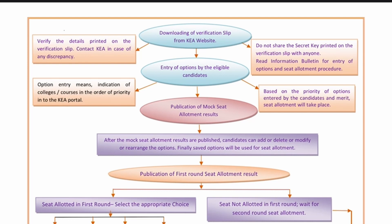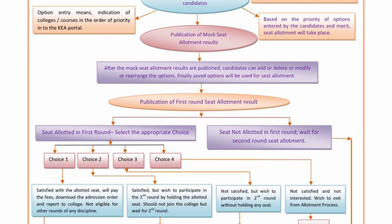The first round seat allotment and the actual seat allotment results will be published. You can also see the published cut-off rank. The KIA website will show choices — Choice 1, Choice 2, Choice 3, Choice 4. You can also see details for BA, CA, PA, PhD, and CS programs.